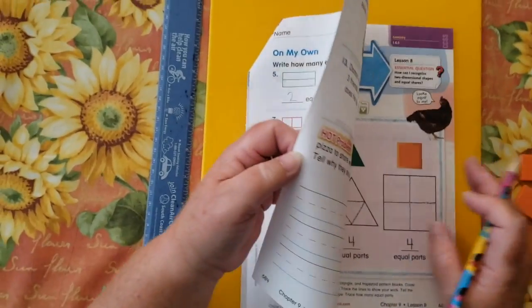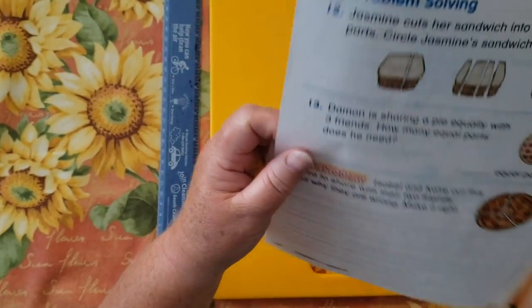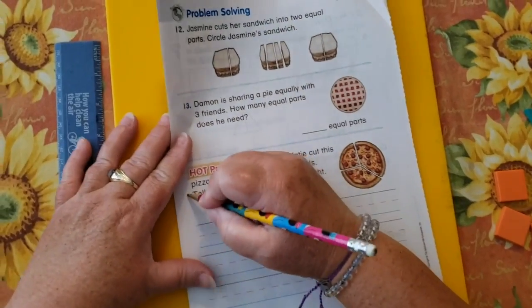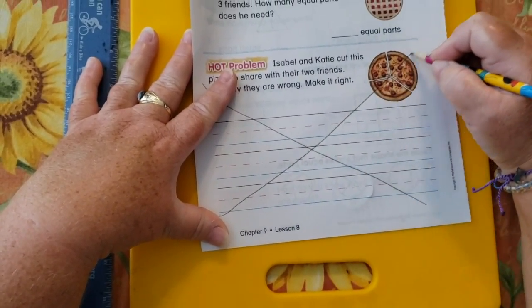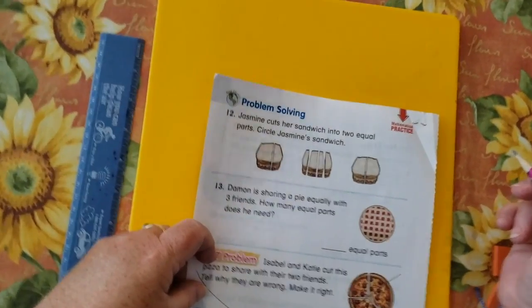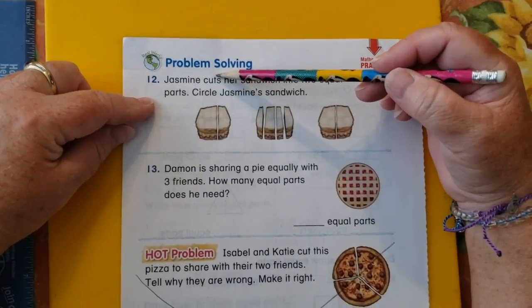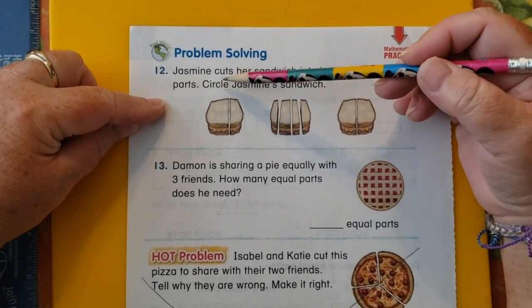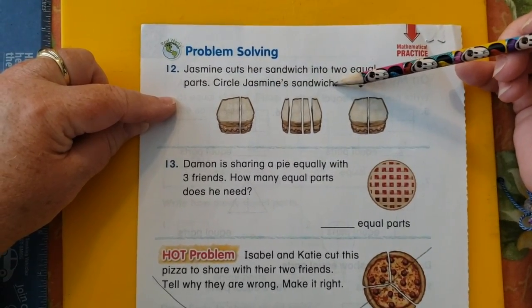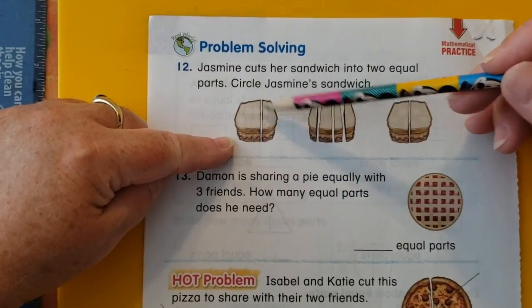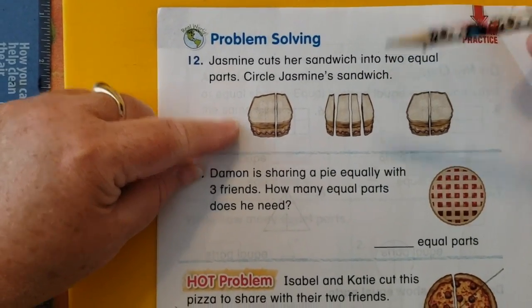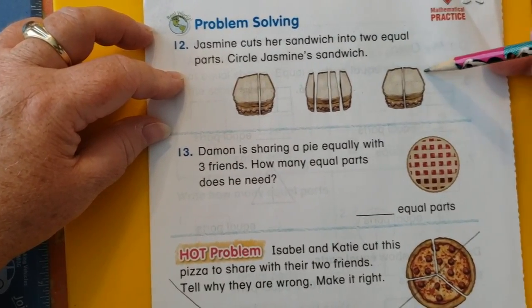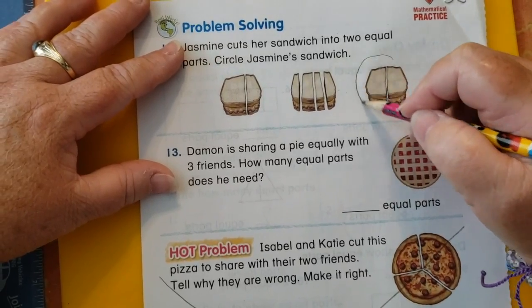Let's go to the back. Go ahead and cross off your hot problem. Jasmine cuts her sandwich into two equal parts. Circle Jasmine's sandwich. Well, you can see. Is that equal? No. Is this two equal parts? Or is this two equal parts? Yes.